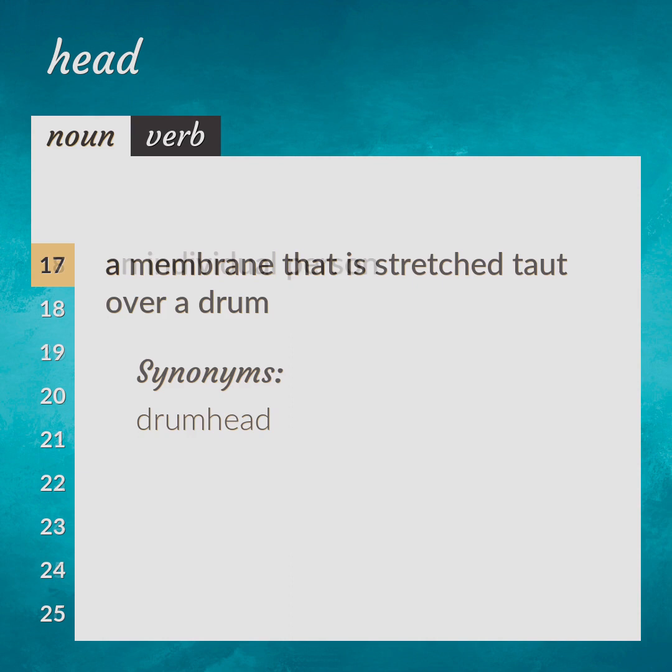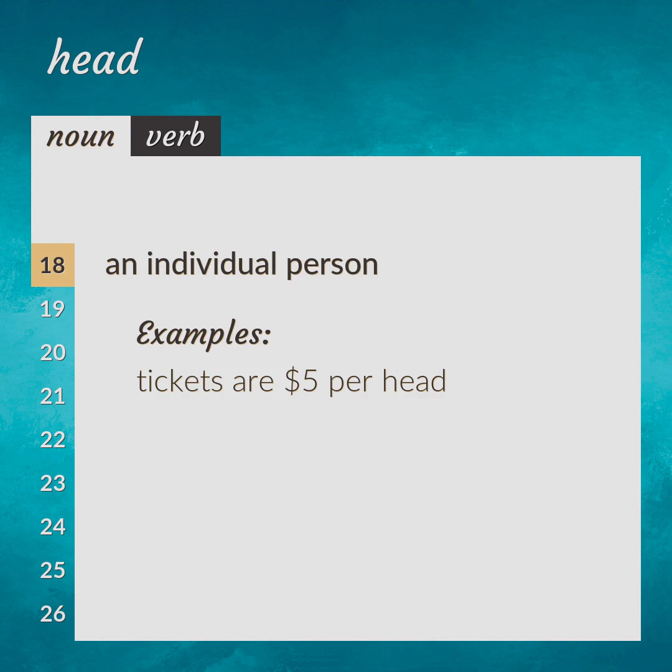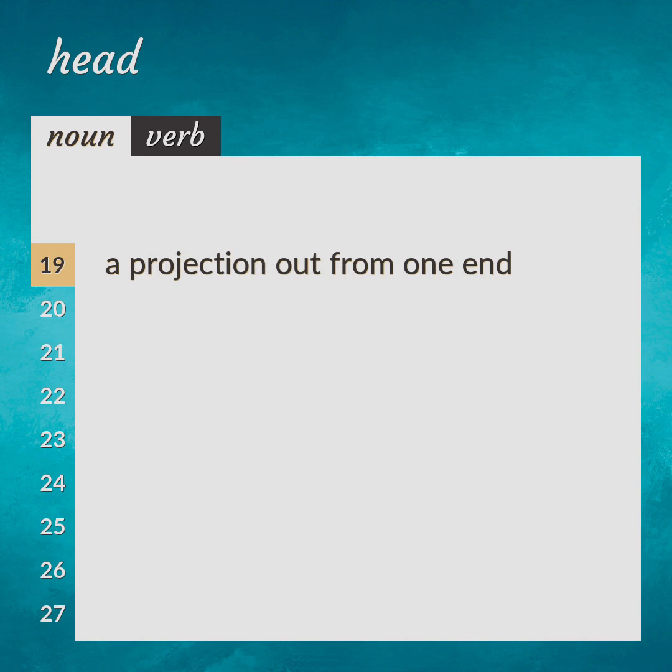An individual person. Tickets are $5 per head. A projection out from one end. The head of the nail.